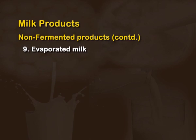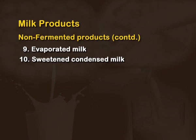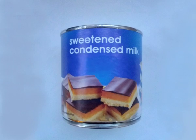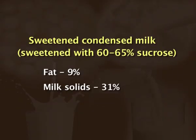Sweetened condensed milk is another version of evaporated milk to which sugar is added. This product is not sterile because of the addition of sugar, but it has a longer preservative life due to the high concentration of sugar. The amount of sugar is about 65 percent, and it should contain 9 percent fat and 31 percent milk solids. It is mostly made with skimmed milk.